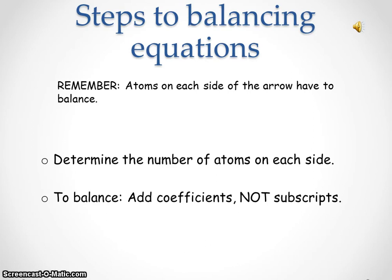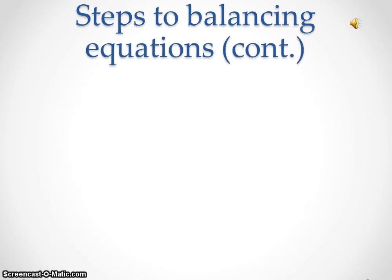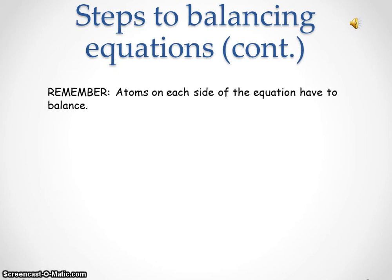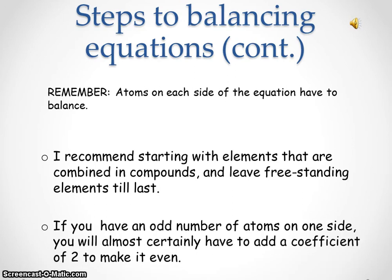Step three: to recalculate, just add more coefficients on each side of the equation as needed. I recommend starting with elements that are combined in compounds and leave freestanding elements to last. If you have an odd number of atoms on one side, you will almost certainly have to add coefficients of two to make it even.